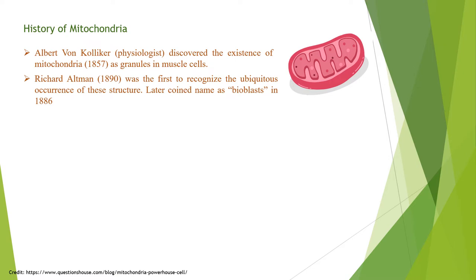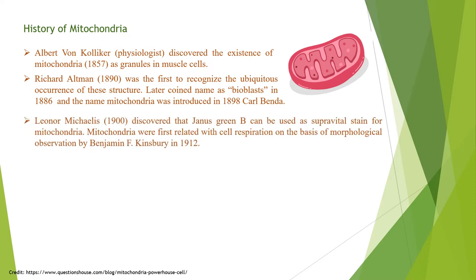Later on, Richard Altman in 1890 was the first to recognize the ubiquitous occurrence of the structures. He called them bioblasts and concluded that they were elementary organisms living inside cells and carrying out vital functions. The name mitochondria was introduced in 1898 by Carl Wendler, and the term originates from the Greek words mitos meaning thread and chondrios meaning granule, referring to the appearance of the structures during spermatogenesis.